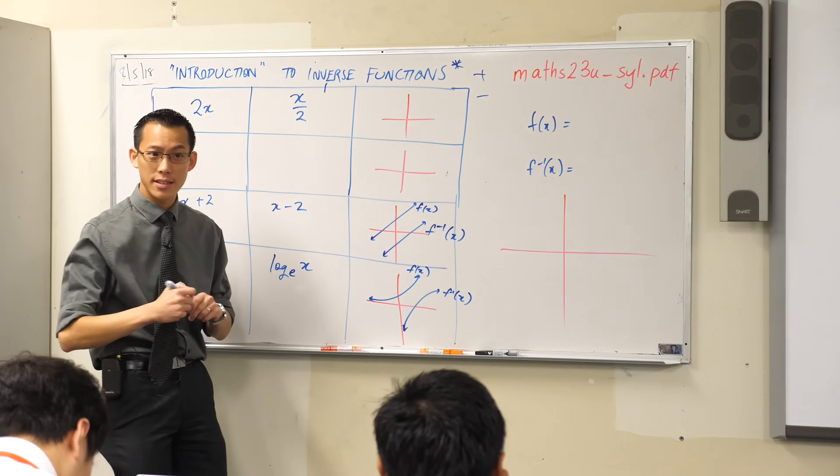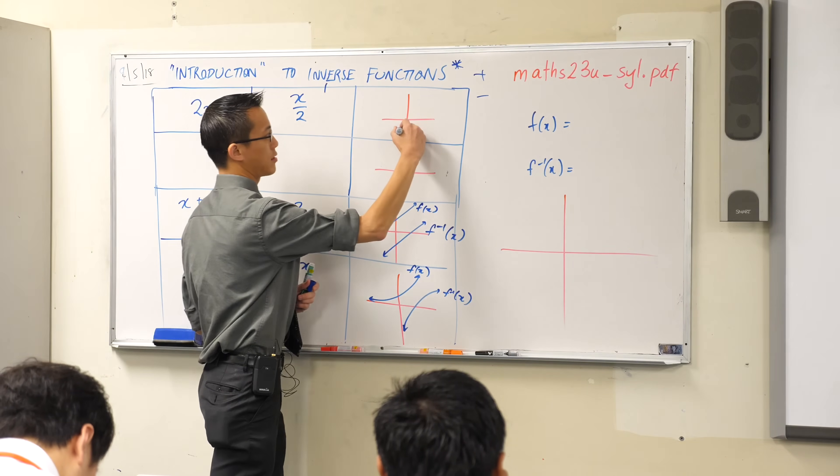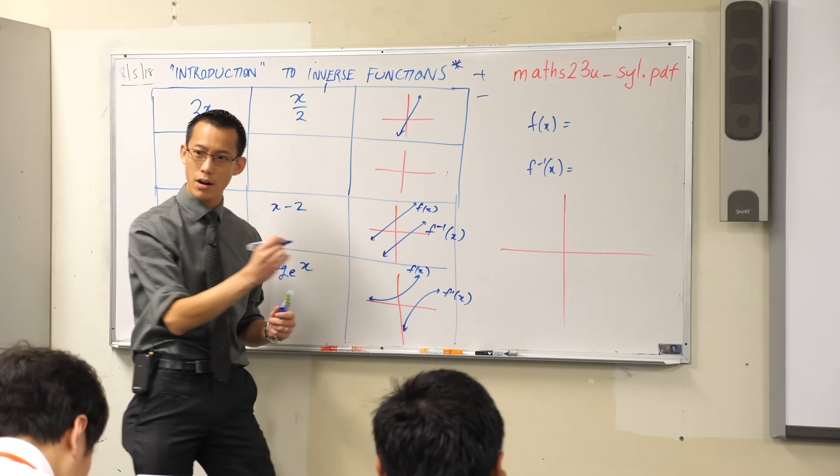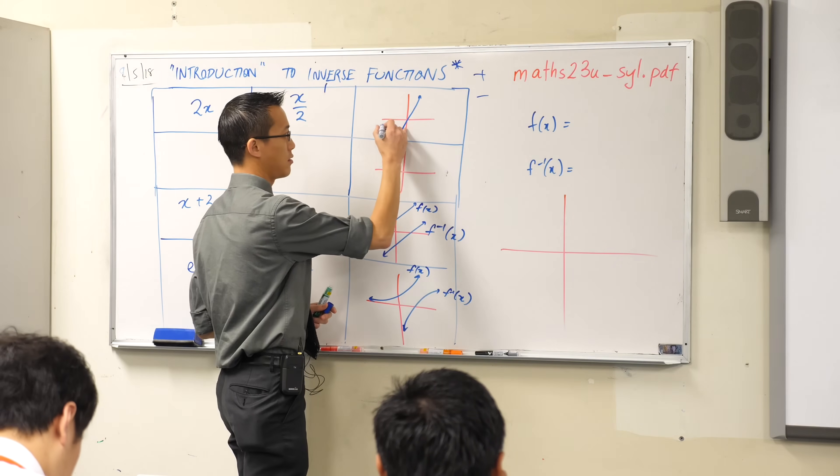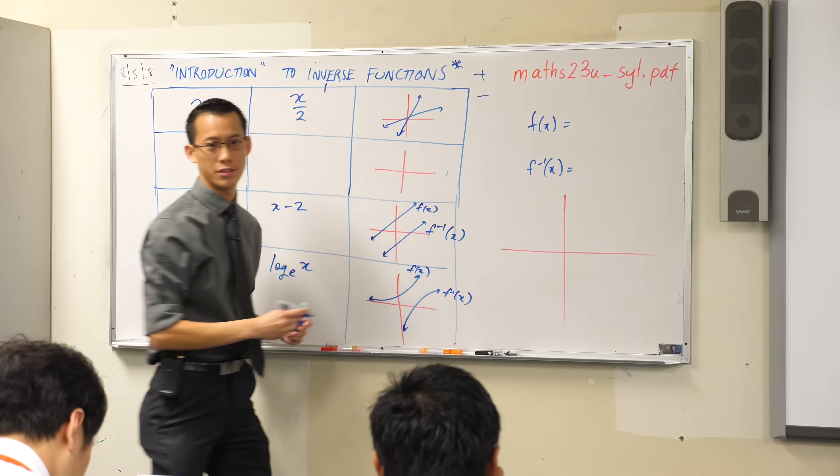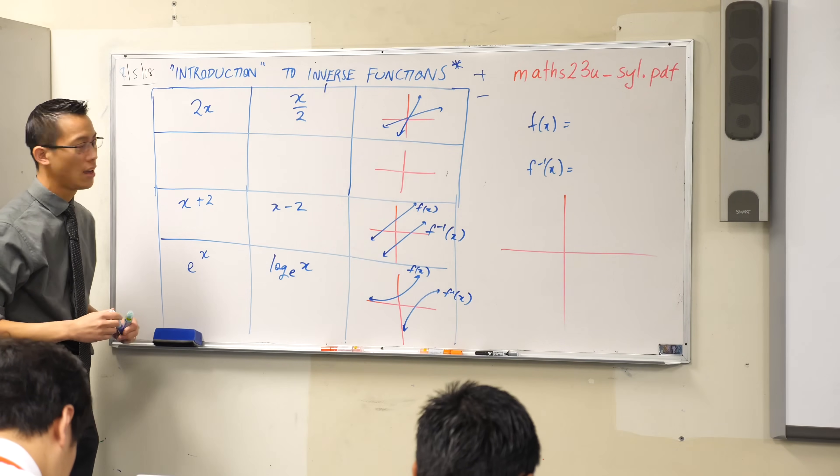Okay, again we can draw a really simple graph of this. What are these things going to look like? Well, 2x is like a steep thing that goes through the origin and x on two is a shallow thing that goes through the origin.